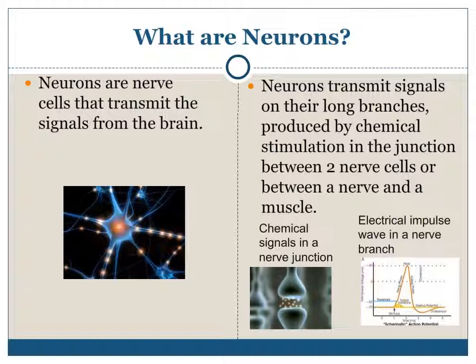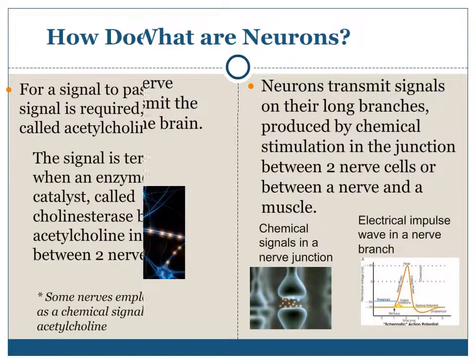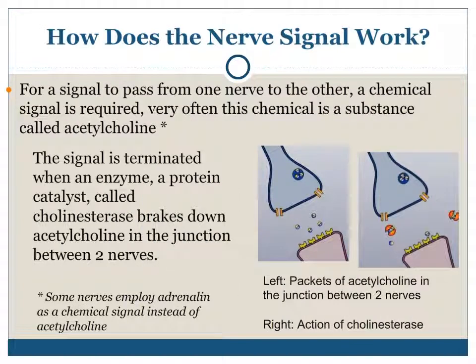Chemical signals in a nerve junction. For a signal to pass from one nerve to another, a chemical signal is required. Very often this chemical is a substance called acetylcholine. The signal is terminated when an enzyme or protein catalyst called cholinesterase breaks down acetylcholine in the junction between two nerves.